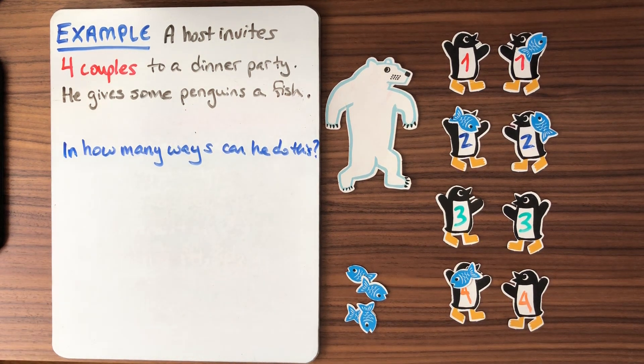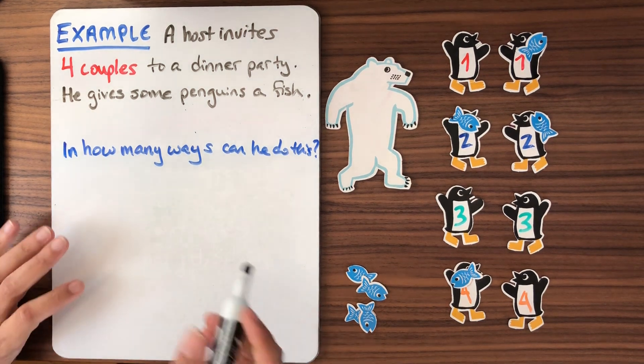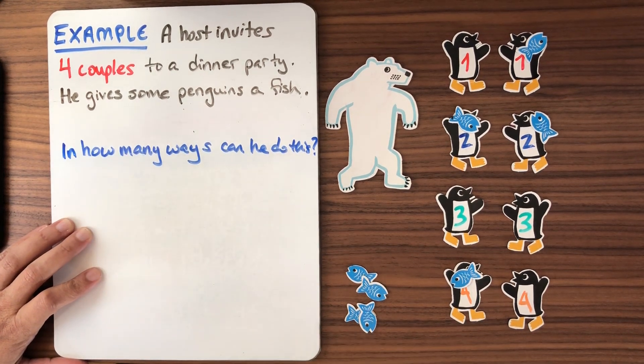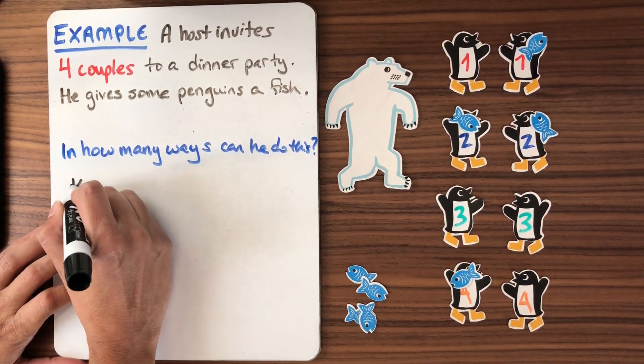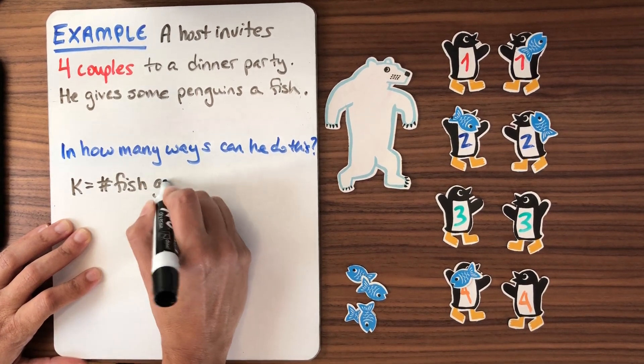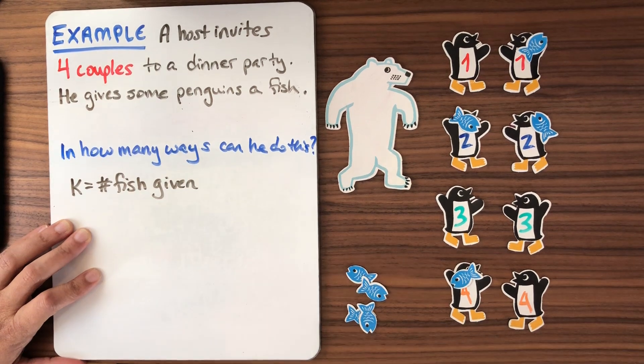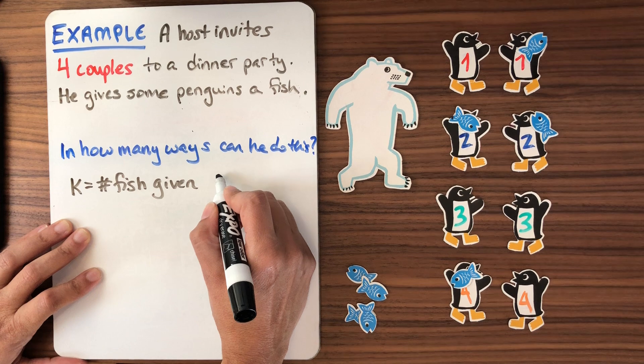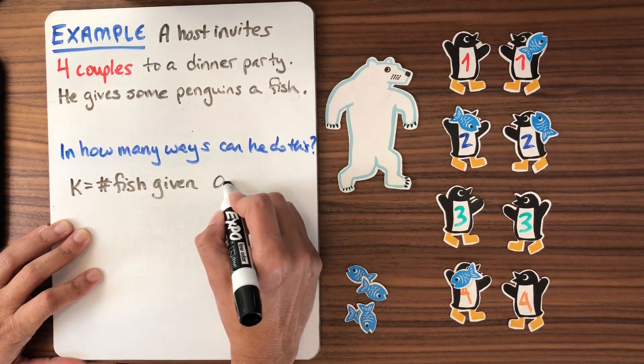Okay, so this is an unconstrained choice problem. Let's solve it before we add an interesting constraint. So in the unconstrained problem, we can think of this in a few different ways. So how many fish is he going to give out? So let's let K equal the number of fish given. And then what does K range from? So it could be zero. He could let nobody have fish.